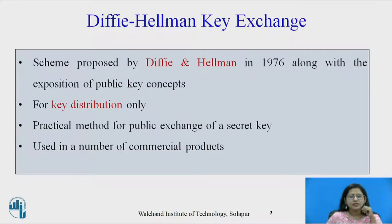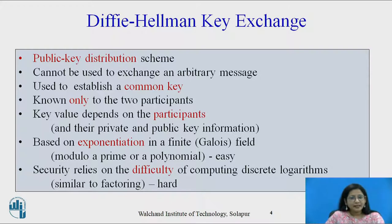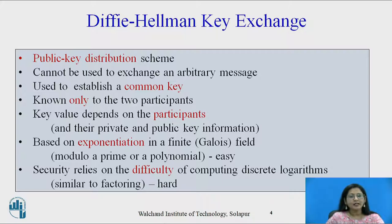Diffie-Hellman key exchange algorithm was a scheme proposed by Diffie and Hellman in 1976, along with the exposition of the public key concept, and it is only used for key distribution. It is a practical method for public exchange of a secret key used in a number of commercial products. It cannot be used to exchange an arbitrary message; it is used to establish a common key known only to two participants. Key value depends on the participants and their private and public key information. The algorithm is based on exponentiation in a finite field modulo a prime or a polynomial, which is easy to compute, and its security relies on the difficulty of computing discrete logarithms.